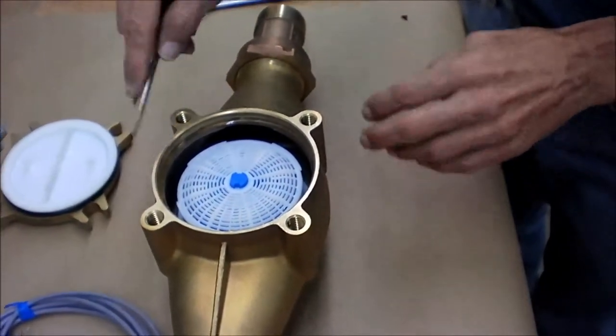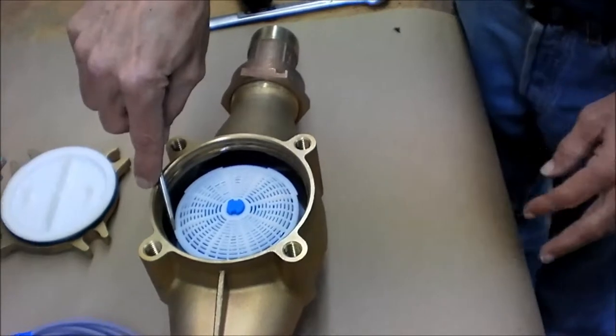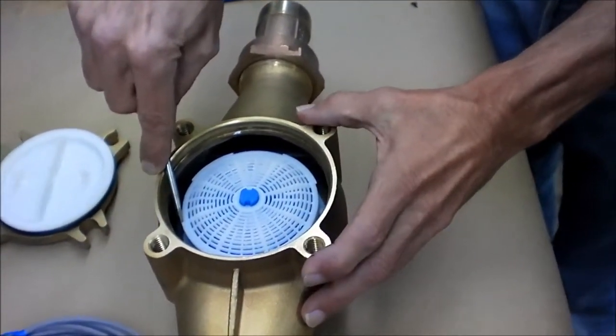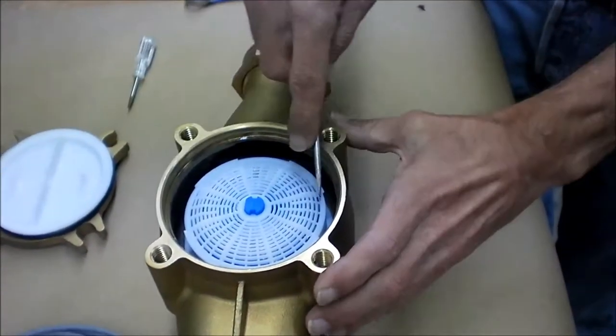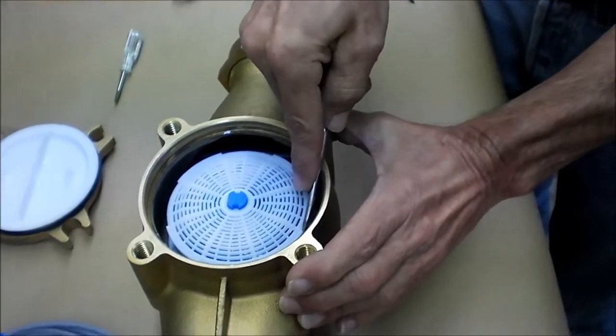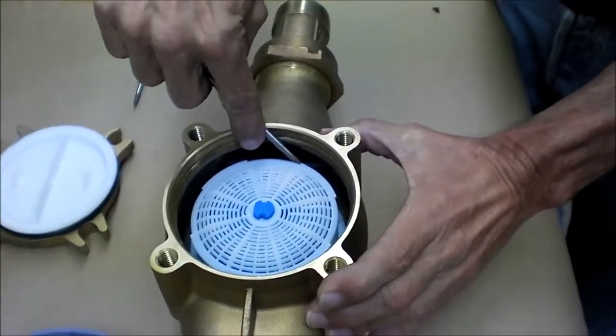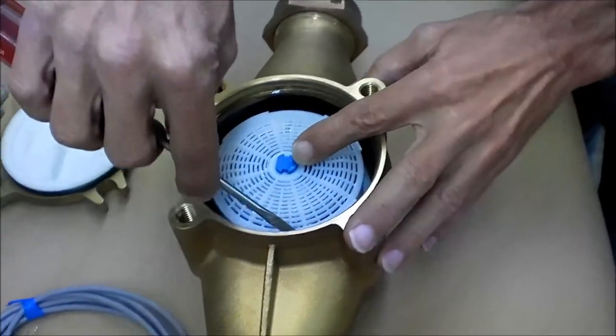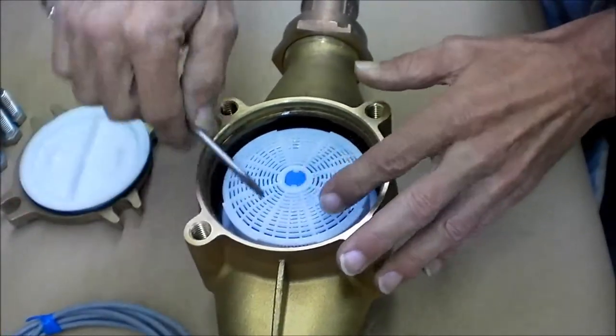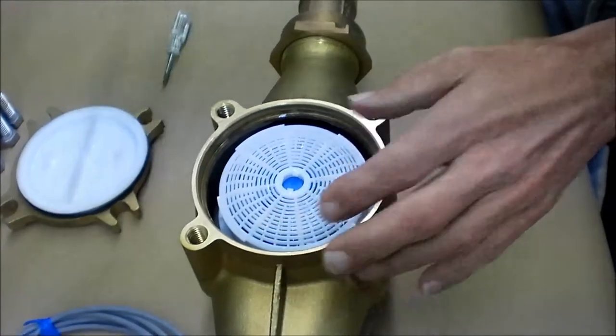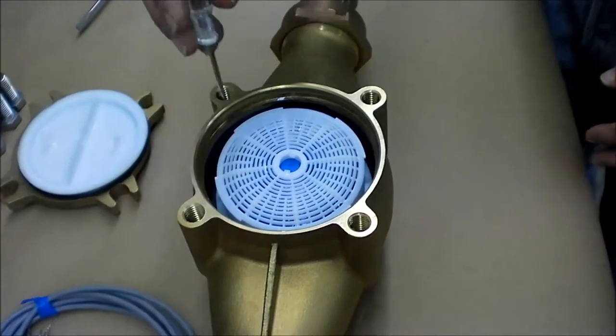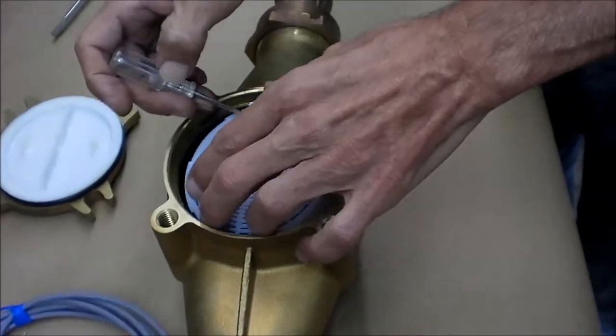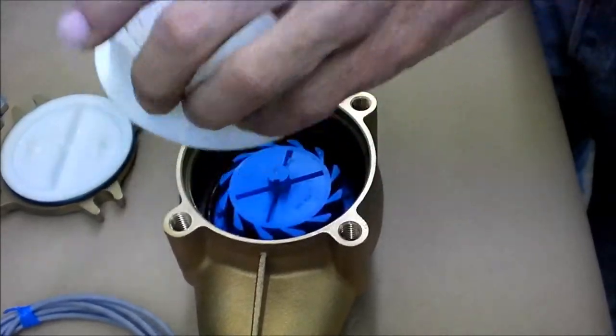With another screwdriver, we're going to gently pry up on the screen. There's an O-ring holding this screen into place. It should not take much force. You want to work your way around gently. You will reach a point at which the piece pops out, and then you can use the small screwdriver to remove the screen.